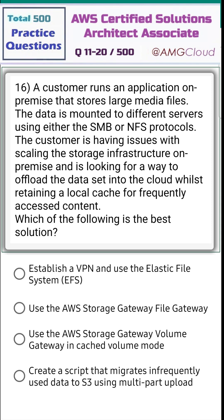Question 16. A customer runs an application on-premises that stores large media files. The data is mounted to different servers using either the SMB or NFS protocols. The customer is having issues with scaling the storage infrastructure on-premises and is looking for a way to offload the data set into the cloud whilst retaining a local cache for frequently accessed content. Which of the following is the best solution?